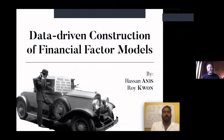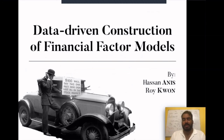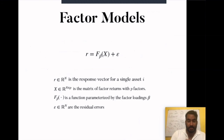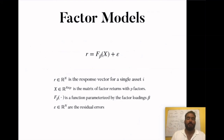I'm going to talk about how to construct financial factor models in a data-driven fashion. This work was conducted alongside my supervisor at the University of Toronto. Factor models are frameworks that allow us to model asset returns in terms of different financial factors or risk drivers. The model looks like: R (the return vector of financial asset I), X (a matrix of factor loadings), and a function F parameterized by factor loadings beta, plus errors epsilon. When creating factor models, we go through two tasks: feature selection (which factors to use) and feature engineering (mapping features to returns).